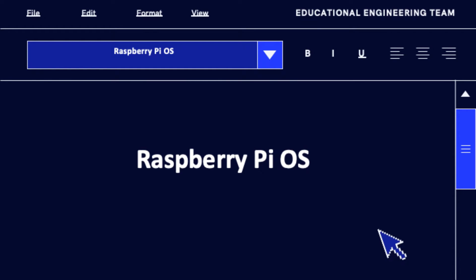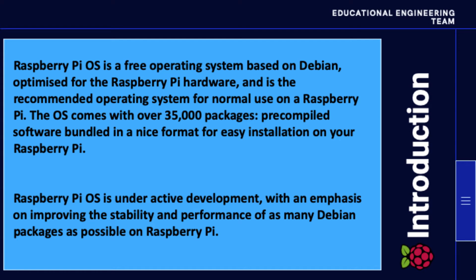The Raspberry Pi OS is a free operating system based on Debian, optimized for the Raspberry Pi hardware, and is the recommended operating system for normal use on a Raspberry Pi. The OS comes with over 35,000 packages, pre-compiled software bundled in a nice format for easy installation. The Raspberry Pi OS is under active development with an emphasis on improving the stability and performance of as many Debian packages as possible on the Raspberry Pi.